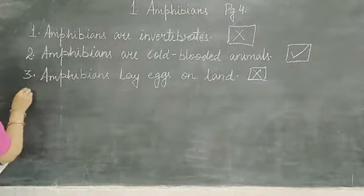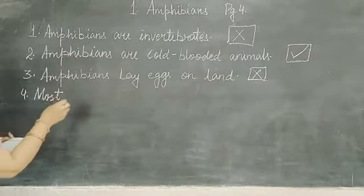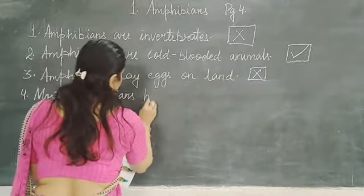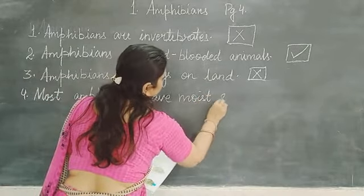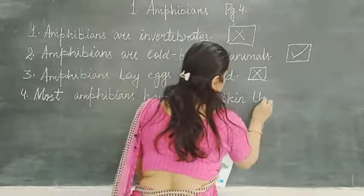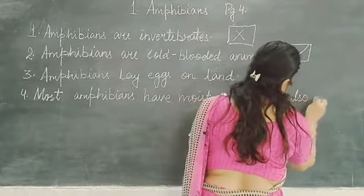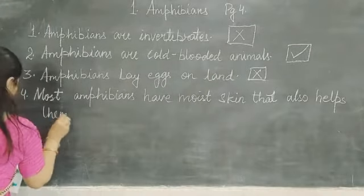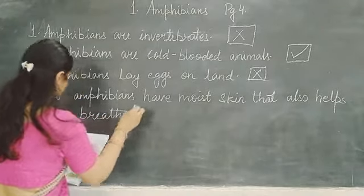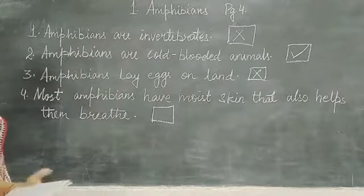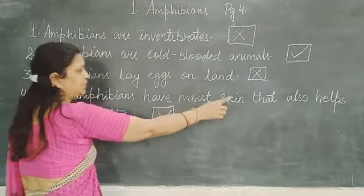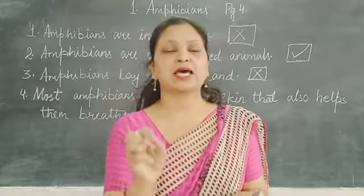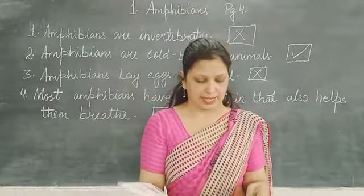The fourth point is: most amphibians have moist skin that also helps them breathe. This is correct. Amphibians have moist skin that helps them to breathe because they have to live in water as well as on land. Their moist skin allows them to easily live in water as well as on land.